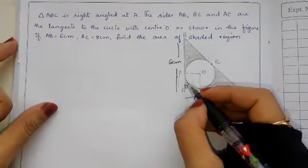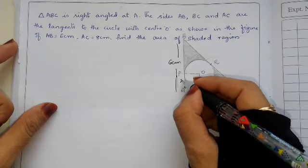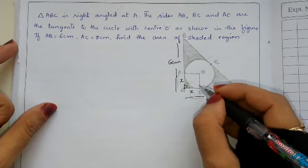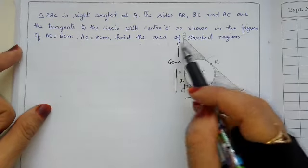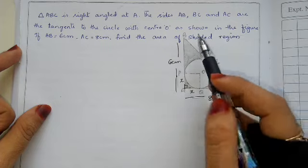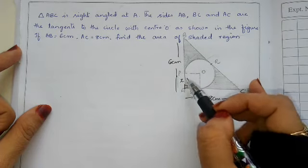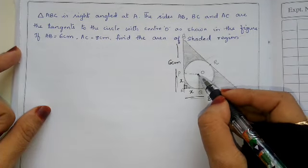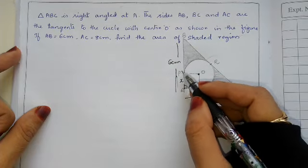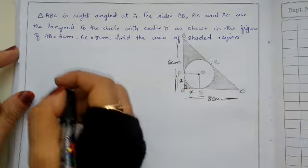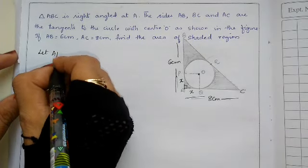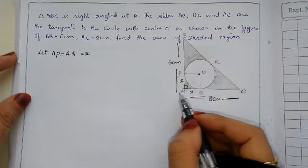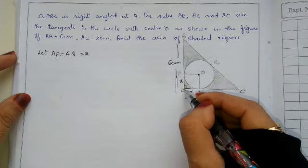Let AP equals AQ equals X, because tangents drawn from an external point are equal. Similarly, BP equals BR, and CQ equals CR — all these are tangents drawn from external points, which are equal as per the circle theorem.